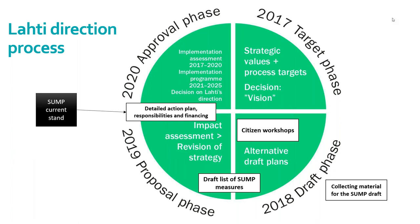Based on the impact assessment results and all other feedback, we are currently developing the detailed action plan for the SUMP, clarifying responsibilities and considering financing. The approval phase is in 2020, and we plan to bring the proposal to the board and city council in March and April 2020. It's the first time we are doing it, so we've already noticed things we could have done differently.